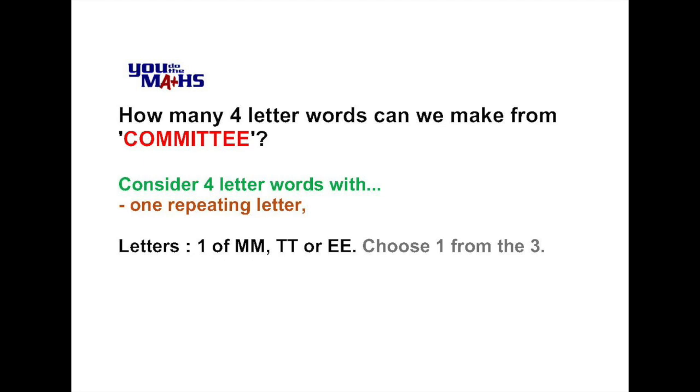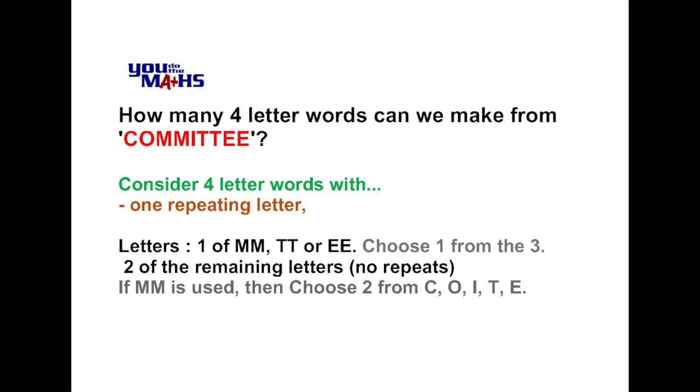Now let's have a look at what happens if there is one repeating letter. So it could be one of double M or double T or double E. First up we need to choose one from those three pairs. Once we've done that we know that there are two more spots remaining which are filled by individual or different letters. As an example, if we chose M M, that means we need to choose two from the remaining letters not including M, of C O I T and E. And then once we've done that we need to find the arrangement of all those four letters, so that represents all the different possible words that can occur.